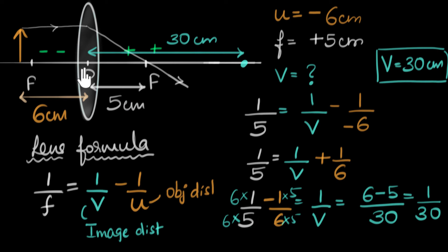And the sign convention we choose is, we always start from the optic center. And then, in the incident direction, all the distances are considered positive.